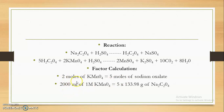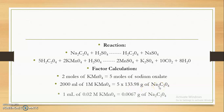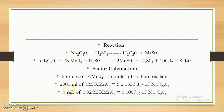Converting: 2 moles of KMnO4 means 2000 ml of 1 molar KMnO4, which is equal to 5 × 133.98 grams of sodium oxalate. Dividing by 2000 and converting to 0.02 molar, we get: 1 ml of 0.02 molar KMnO4 is equivalent to 0.0067 gram of sodium oxalate. This is the factor used for calculation. This concludes the preparation and standardization of Potassium Permanganate.